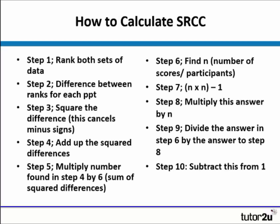This is a breakdown of the different steps in calculating Spearman's rank. The first thing we're going to do is rank both sets of data. We're going to find the difference between the ranks for each participant, square this difference to cancel out any minus signs, add up the total and then multiply this by 6. We're then going to find the number of participants, times that by itself and minus 1, multiply that by n, then divide the answer from step 6 by the answer from step 8, and then subtract this from 1.